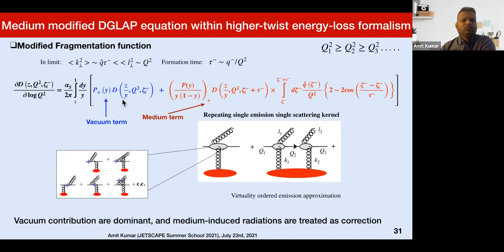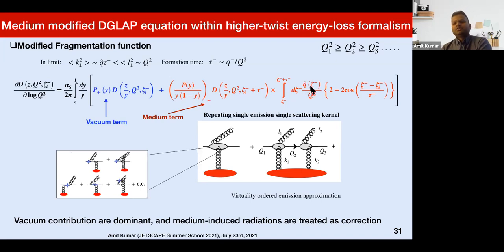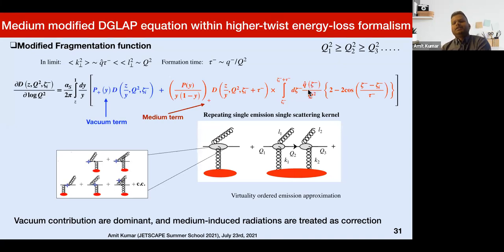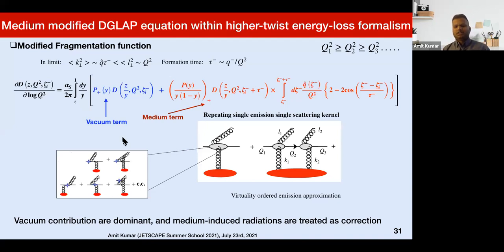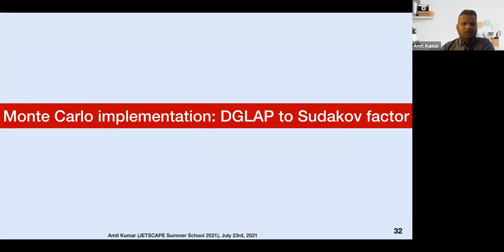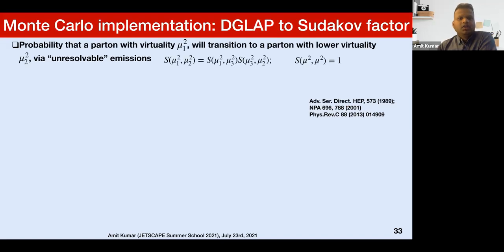The vacuum contributions are dominant and medium-induced radiation are treated as corrections. Next I would like to talk about the Monte Carlo implementation — how we go from DGLAP to the Sudakov factor. To do this, one defines a Sudakov factor, which essentially represents the probability to cascade a parton at virtuality mu-squared-one to mu-squared-two via unresolvable emissions.